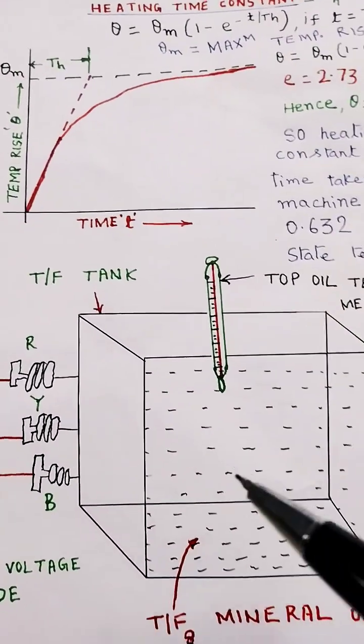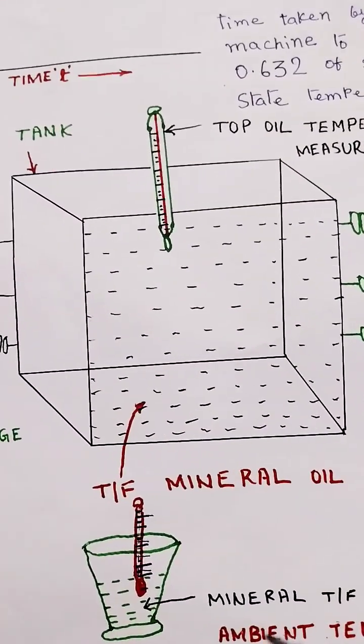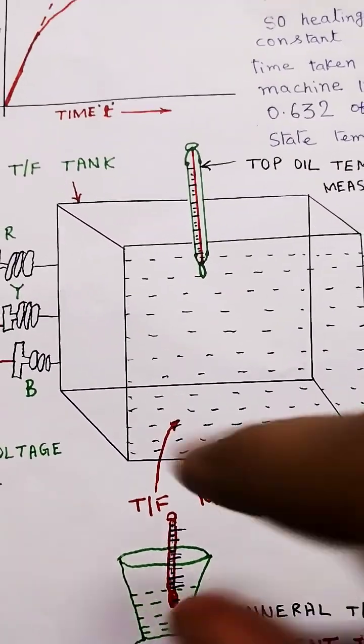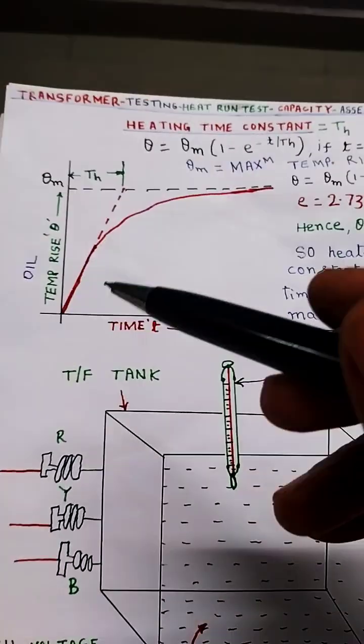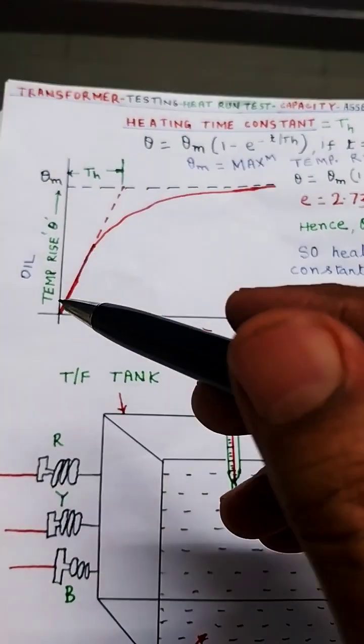This thermometer measures top oil temperature and this thermometer measures ambient temperature. The difference of the two temperature readings versus time curve is given here.